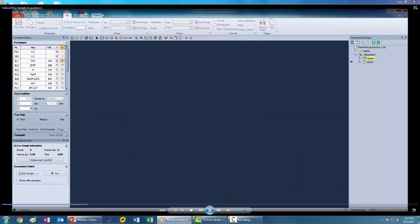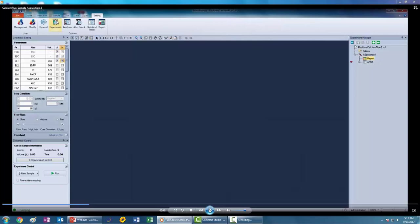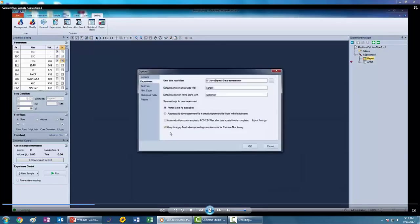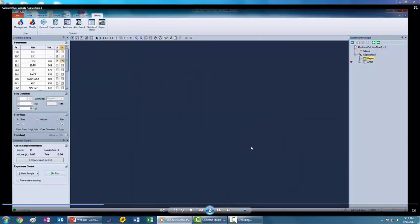For all data to be appended properly, the next step is really important. In this settings tab, go to the experiment button and make sure that the 'keep time gap fixed when appending sample events for calcium flux' checkbox is selected. This is a setting specific for the calcium flux assay and allows you to change the gap so that appended data is set to the physical time it takes to load the sample and begin acquiring data, which keeps the gaps consistent between your samples.